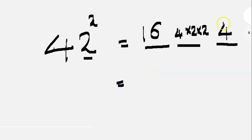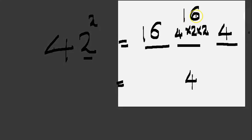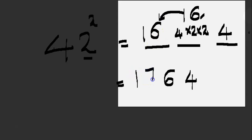Now we are going to do this. Here is 4. We are going to multiply: 4 into 2 is 8, and 8 into 2 is 16. What is the number in the ones place? The ones digit is 6. Then we add: 16 plus 1 is 17. So the answer is 1764.